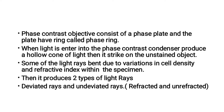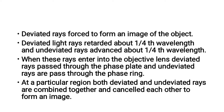This produces two types of light rays: deviated rays and undeviated rays, also called refracted rays and unrefracted rays. Deviated rays pass through to form an image. Deviated light rays are retarded about one-quarter wavelength and undeviated rays are advanced about one-quarter wavelength.